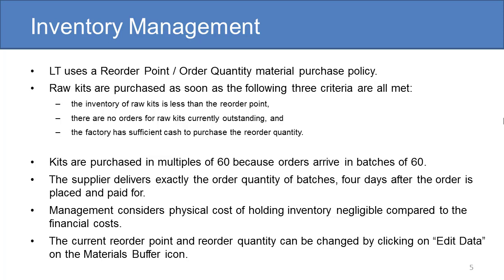No order is placed if any of these three criteria are not met. Kits are purchased in multiples of 60 because orders arrive in batches of 60. A reliable supplier delivers exactly the order quantity of batches four days after the order is placed and paid for. Management considers the physical cost of holding inventory negligible compared to the financial cost. Other details concerning the purchasing policy can be found in the Littlefield Technologies Overview note. The current reorder point and reorder quantity can be changed by clicking on Edit Data on the Material Buffers icon.